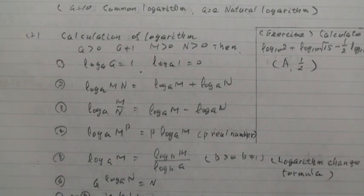Property 2, log A M N equal log A M plus log A N.